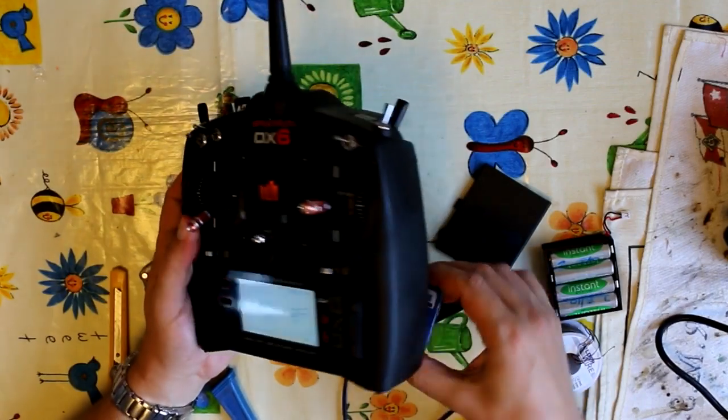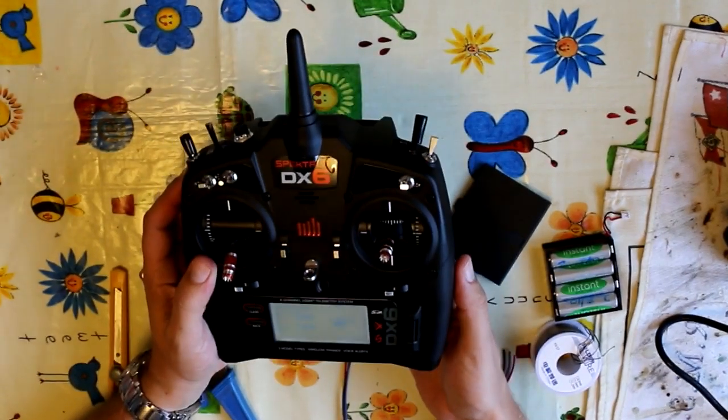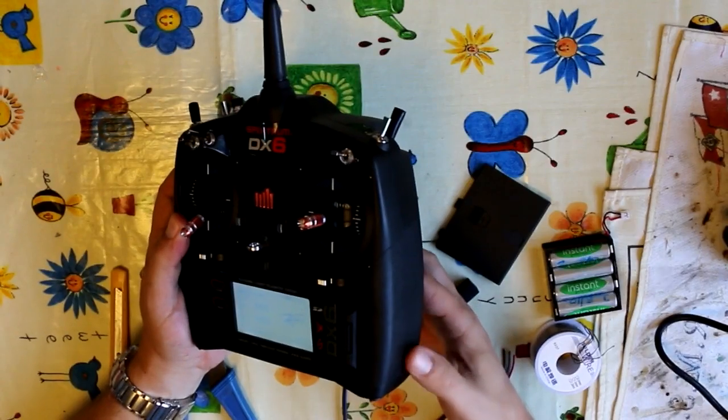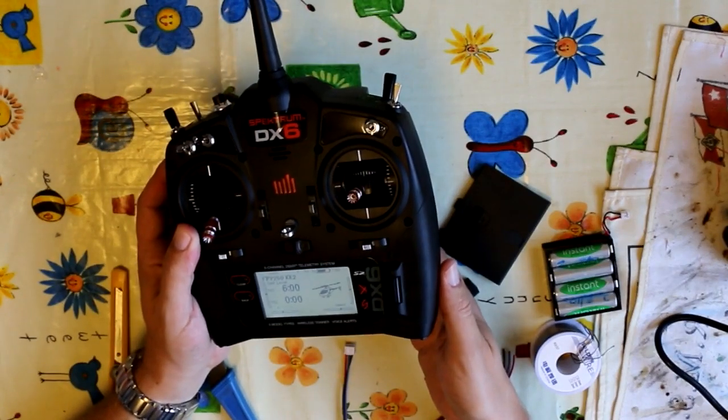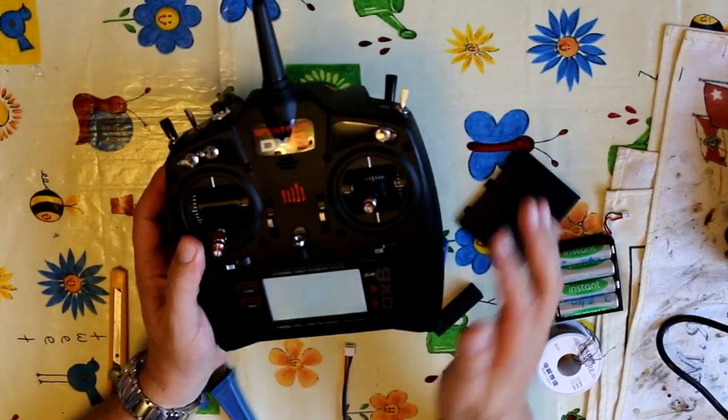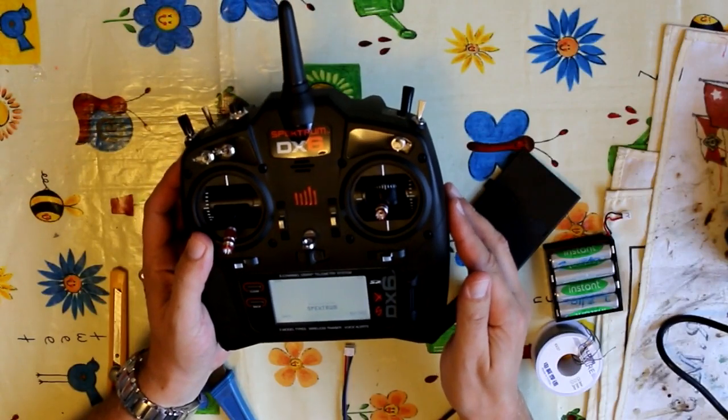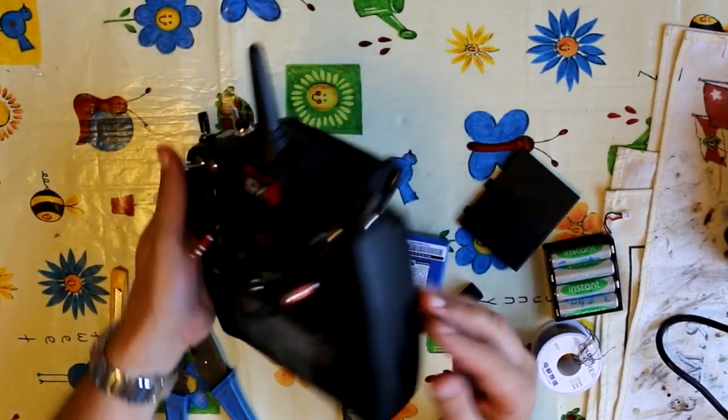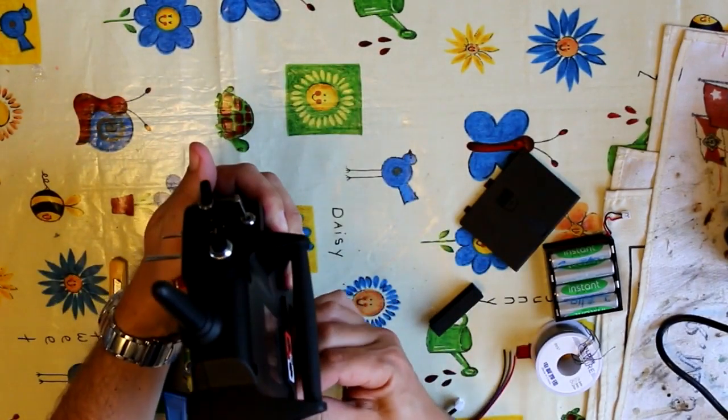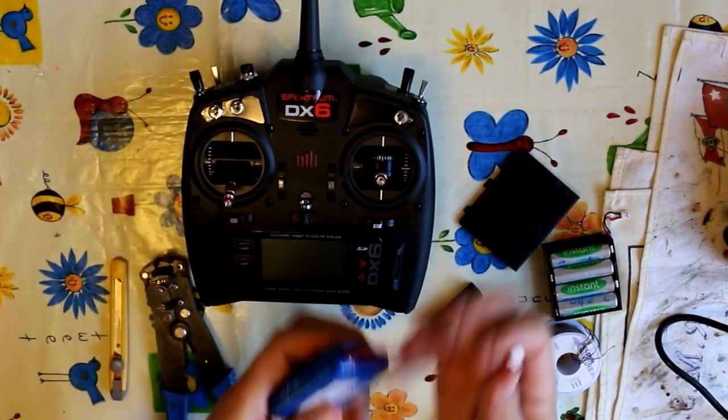Now the only issue with this is that there's no way to recharge that battery because there's no socket on the transmitter to charge from. So there's a couple of ways around that. If you have a DX8 you could just plug the battery into your DX8 and just charge it in the DX8 and then swap it over. That would work fine.